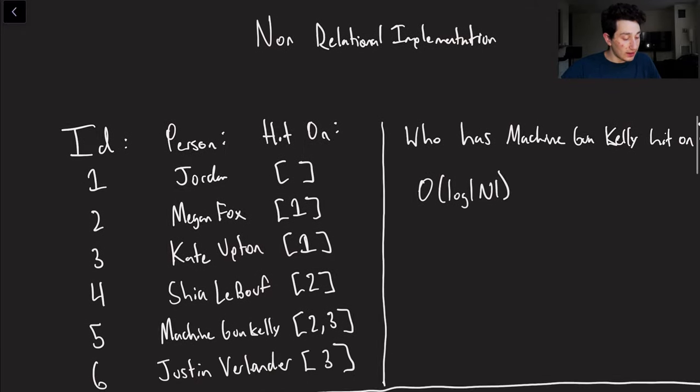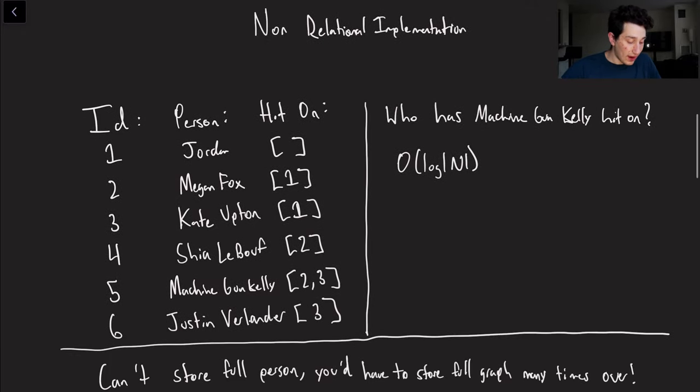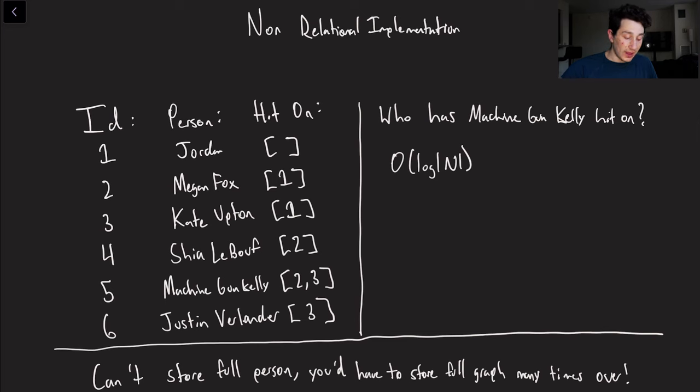And so using a relational database to build a graph probably isn't your best idea. It shouldn't be the case that as we add more nodes to the graph it literally gets slower to traverse. That shouldn't really matter at all. Okay so let's think about a non-relational implementation of a graph. This could be a little bit better. So as you can see since we have more data locality since we don't have a set structure, we can actually just have a field that's a list and it stores the IDs of the people that we've hit on.